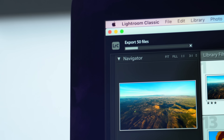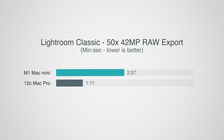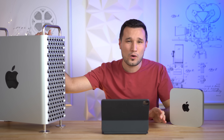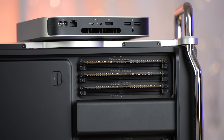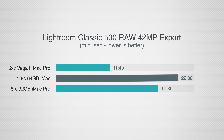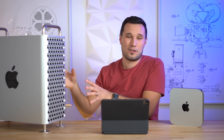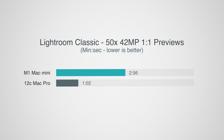You don't have to wait for photo editing apps to be optimized — it works great on the Mac Mini. For exporting, I exported 50 42-megapixel images with corrections and the Mac Pro absolutely smokes the Mac Mini. This is because the Mac Pro's six-channel memory is quite a bit faster than dual-channel. Building one-to-one previews shows the same result — the Mac Pro is quite a bit faster there as well.